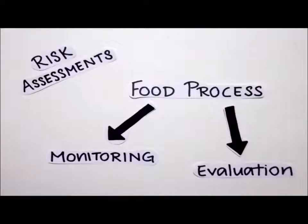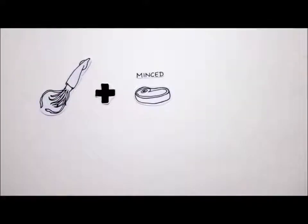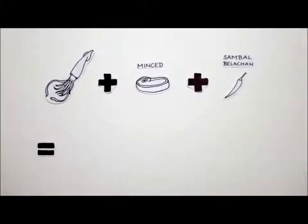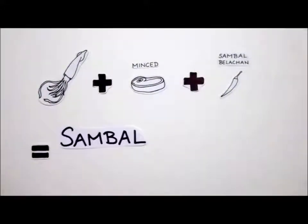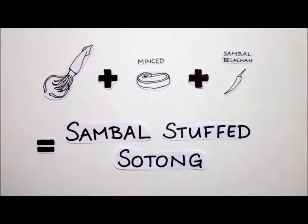A HACCP plan is usually created for a certain food process. For our HACCP plan, we have decided to use sambal stuffed sotong as our main dish. The dish is actually squid that is stuffed with minced pork meat and then baked with sambal chilli sauce.